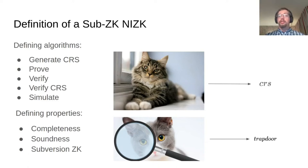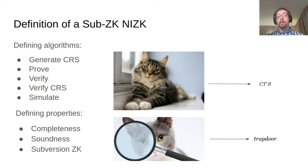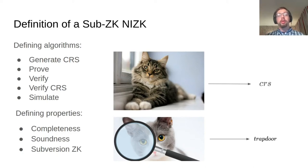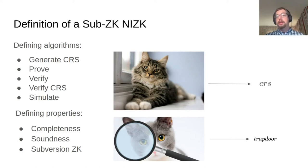I'll now give a slightly more proper definition of subversion zero knowledge NIZK. It consists of five main algorithms and has three main defining properties. The algorithms are: a generate-CRS algorithm; a prove algorithm to prove statements; a verify algorithm to verify statements and proofs; a verify-CRS algorithm to verify that the CRS is of the correct form; and a simulate algorithm, which is part of the mathematical definition of zero knowledge.